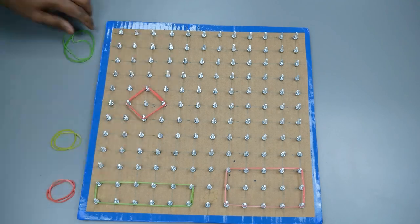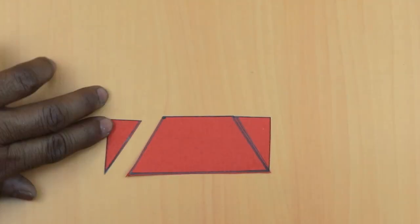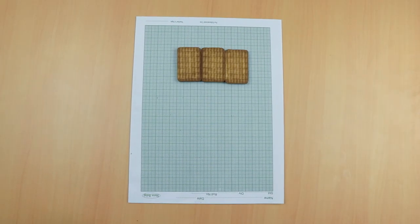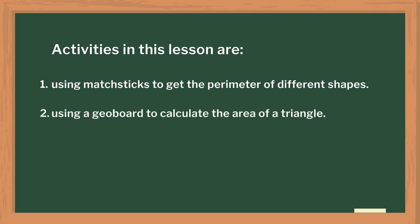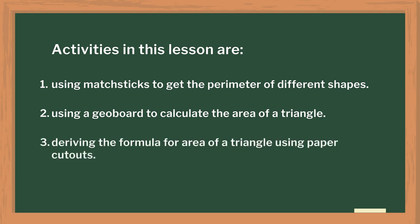Johanna Kepler once said, 'Where there is matter, there is geometry.' Everything around us has some shape, and it is important to learn how to study them. The aim of this video is to introduce the concept of perimeters and areas for sixth standard students. Students will enjoy, understand, and calculate the perimeters and areas for some basic shapes through activities like using mastic to get the perimeter of different shapes, using a geoboard to calculate area of a triangle, deriving the formula for area of a triangle using paper cutouts, and deriving the formula for area of a circle. Let us begin.